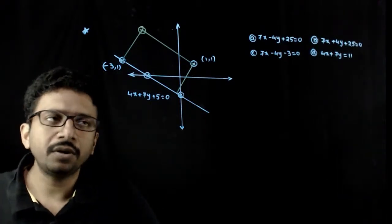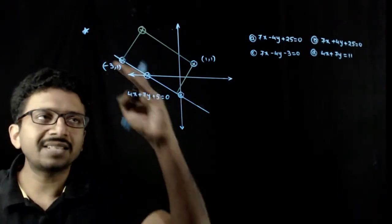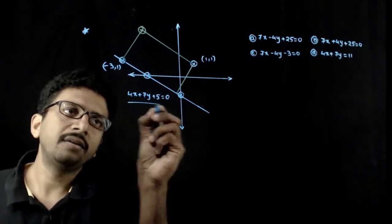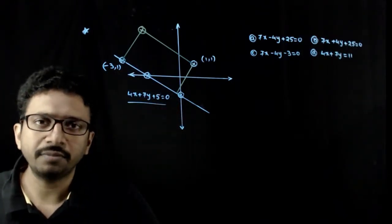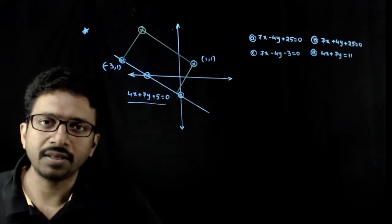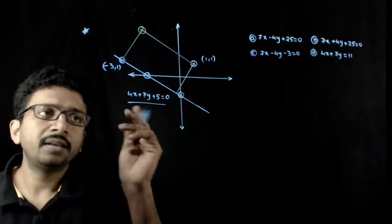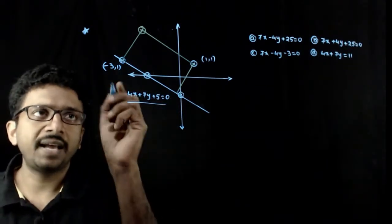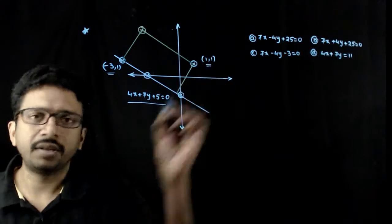Welcome students. In this question, you are given that one side of a rectangle lies along the line 4x + 7y + 5 = 0. One side of a rectangle lies along this line and two of the vertices of this rectangle are given as (-3, 1) and (1, 1).